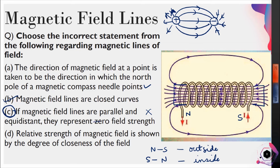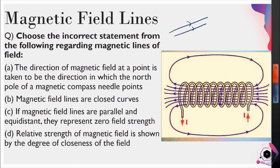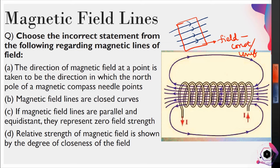Parallel and equidistant magnetic field lines actually represent uniform field strength — meaning the field strength is the same everywhere in that region. So if you see parallel equidistant field lines in a region, the magnetic field there is constant, not zero.